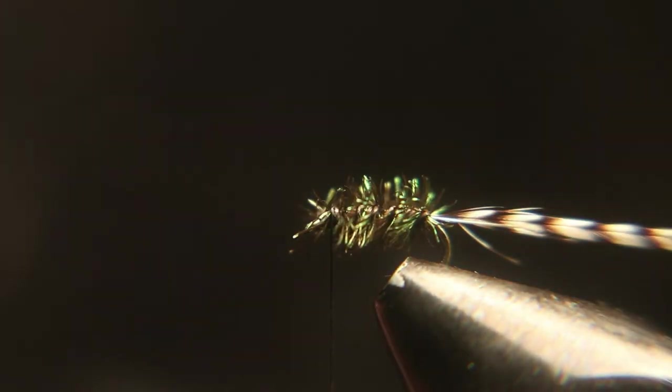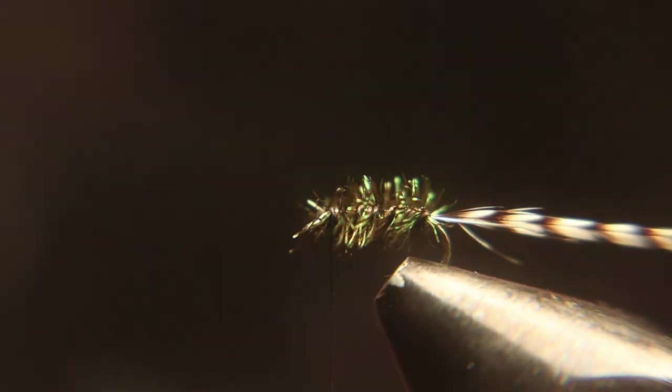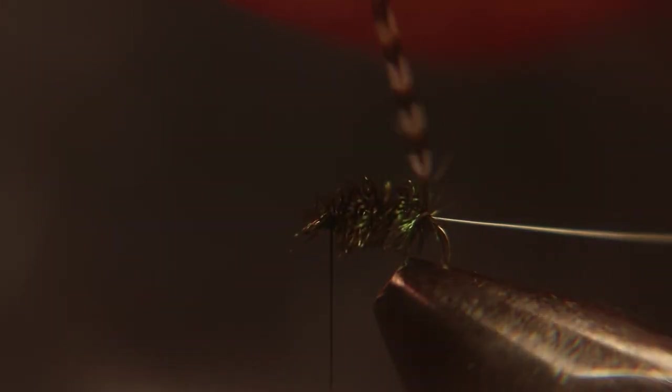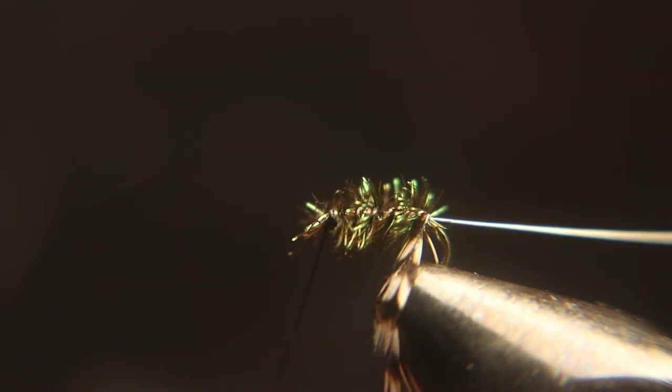Now make sure your thread is still at the eye of the hook. Then you're going to run this palmer style or hackle style, leaving gaps in between your wraps, and run that up to the eye of the hook and tie it off.